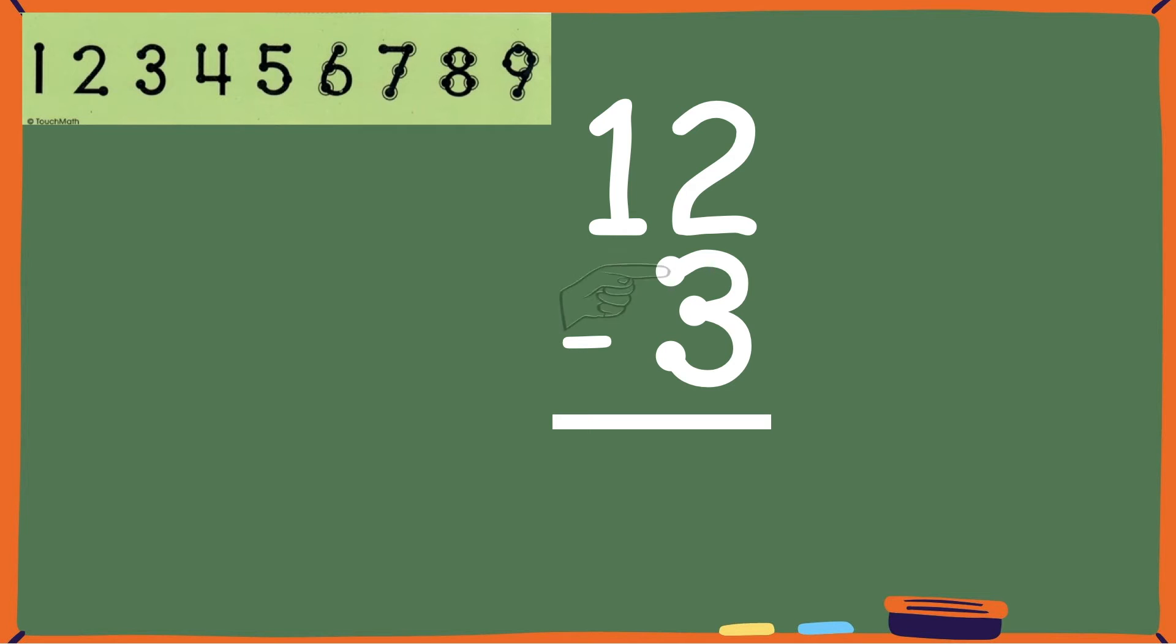12, 11, 10, 9. So the difference, or answer, to this subtraction sentence is 9. 12 minus 3 equals 9.